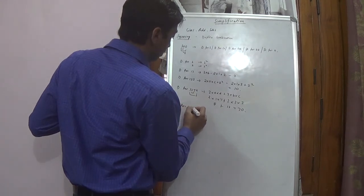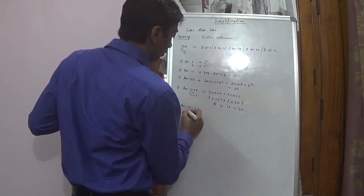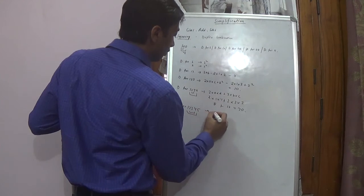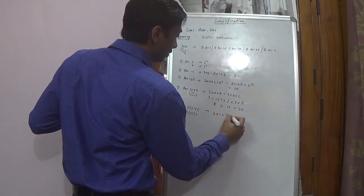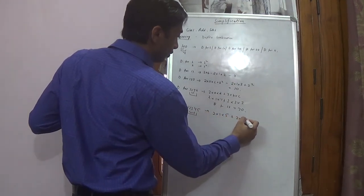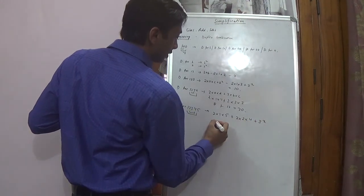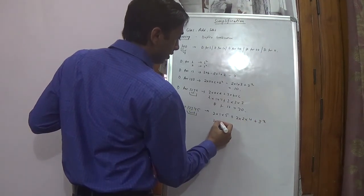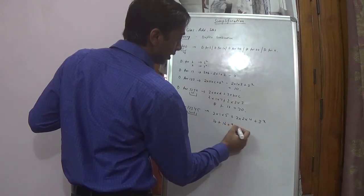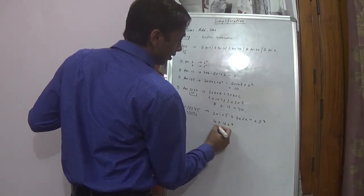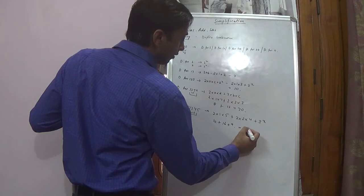For 5 digits — 1, 2, 3, 4, 5 — the duplex is 2 into 1 into 5, plus 2 into 2 into 4, plus duplex of 3. So that is 10 plus 16 plus 9. Then 16 plus 9 is 25, and 10 plus 25 gives us 35.